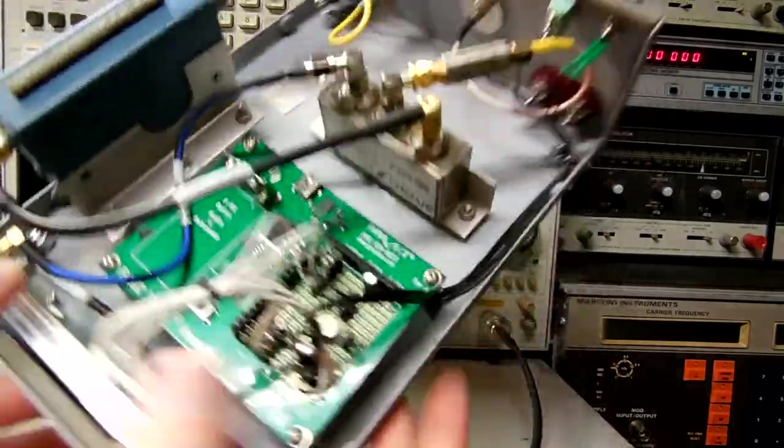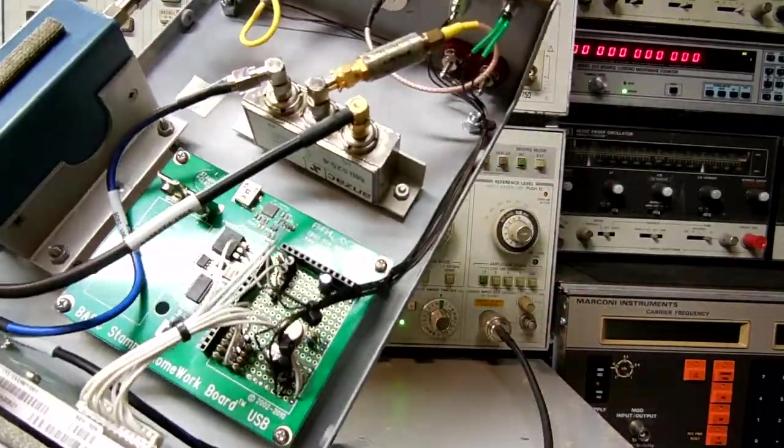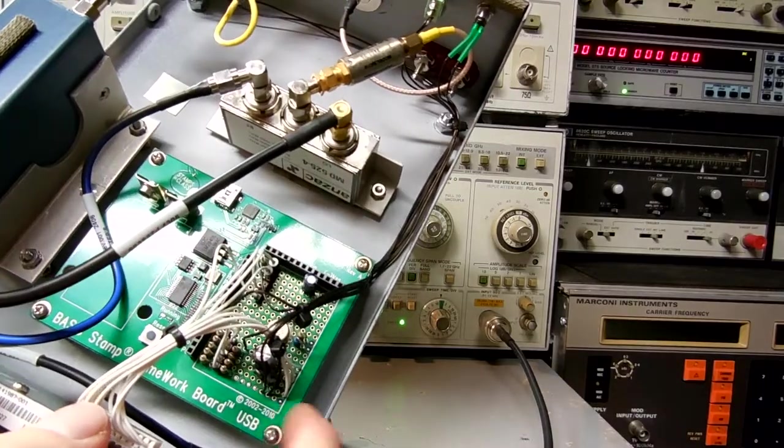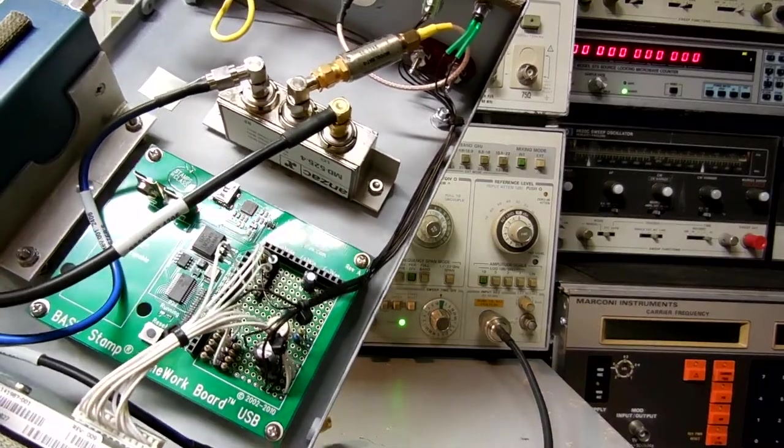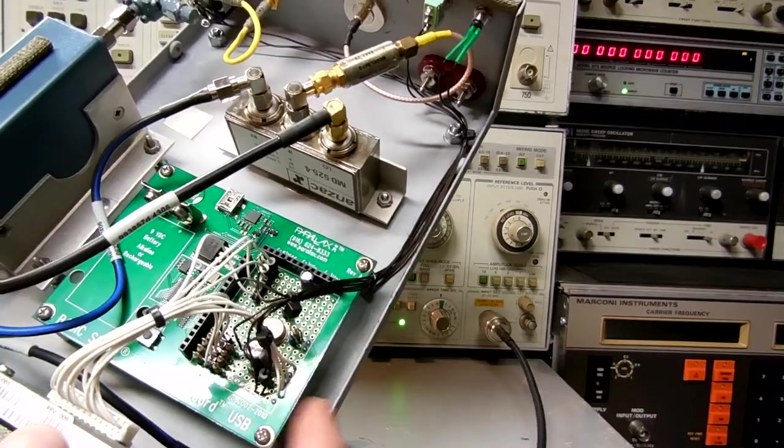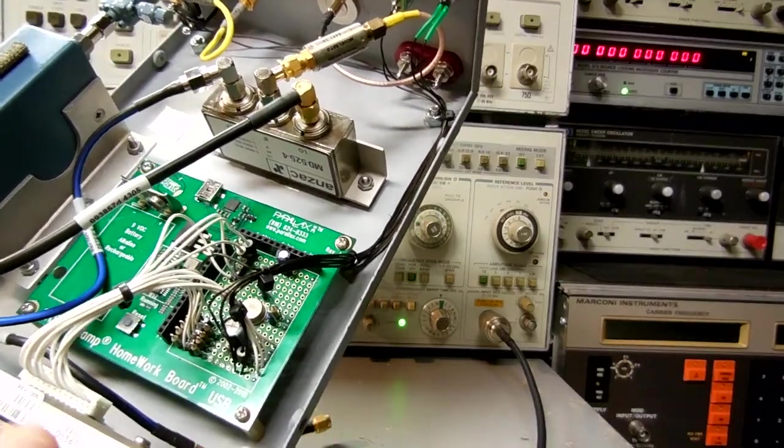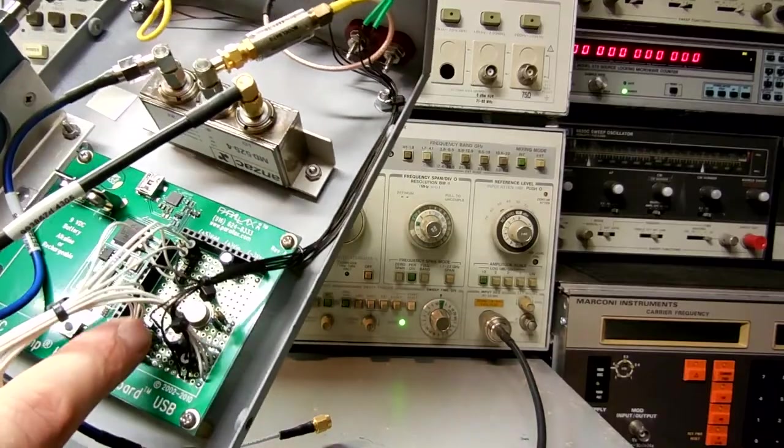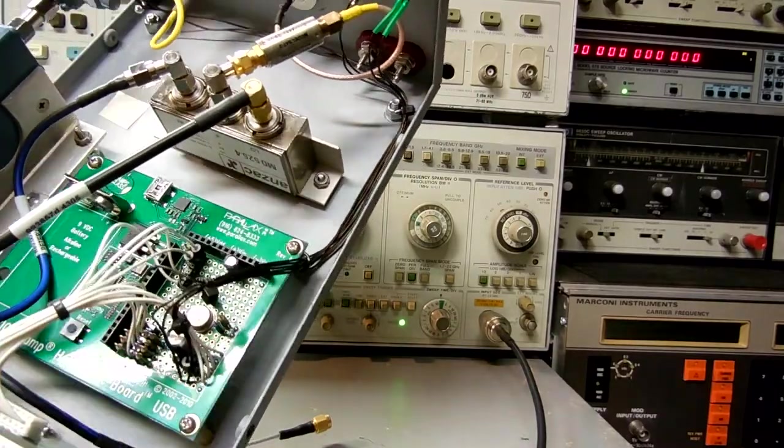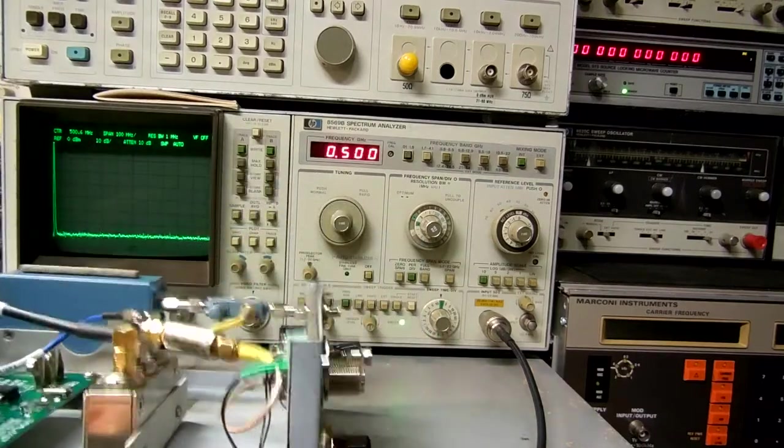And then the programmed Mini Circuits oscillator. We're using a basic stamp, a homework board which you can buy at Radio Shack. And the oscillator requires 12.5 volts, so I have a little LM117 voltage regulator to generate that voltage.